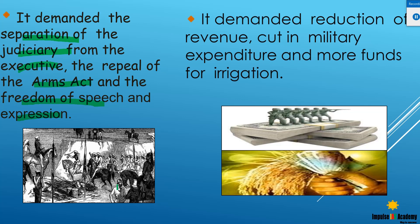They also wanted to reduce revenue expenditure and cut military expenses. The British used to fund their foreign expeditions through Indian revenues, and political leaders wanted to stop the use of Indian funds for such expeditions. Another demand was for more funds for irrigation, because India's agriculture is mainly monsoon-based. There were severe famines in the 1880s, and Congress leaders understood that funds should be directed towards irrigation infrastructure.